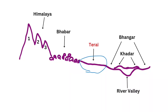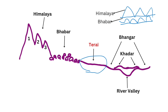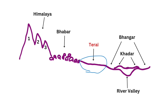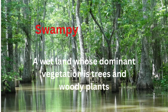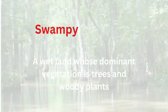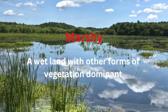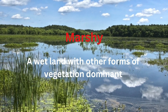Terai lies towards the south of the Bhabar belt. First we have the Shivaliks, parallel to which we can see the Bhabar belt, and south of the Bhabar belt we have Terai. In the Terai region, the streams that disappeared in the Bhabar region reappear and make swampy and marshy regions. A swamp is a wetland whose dominant vegetation is trees and shrub plants, while a marsh is a wetland with other forms of vegetation dominant.